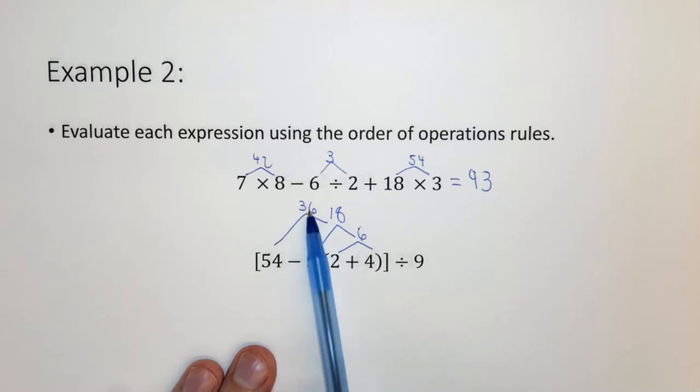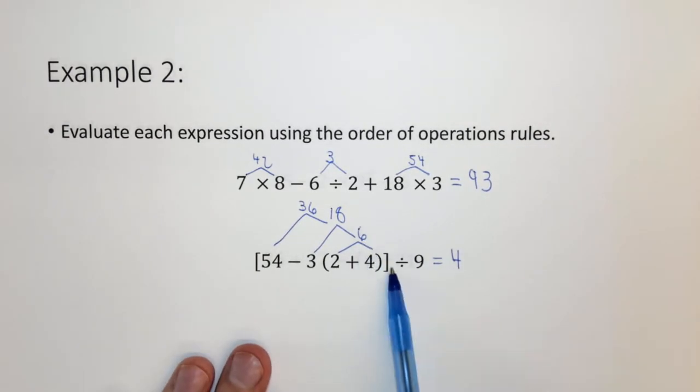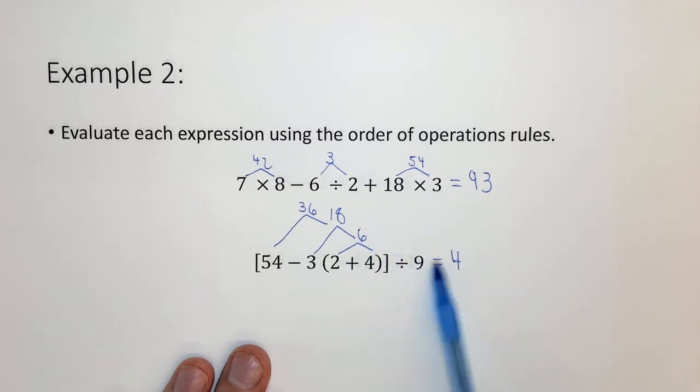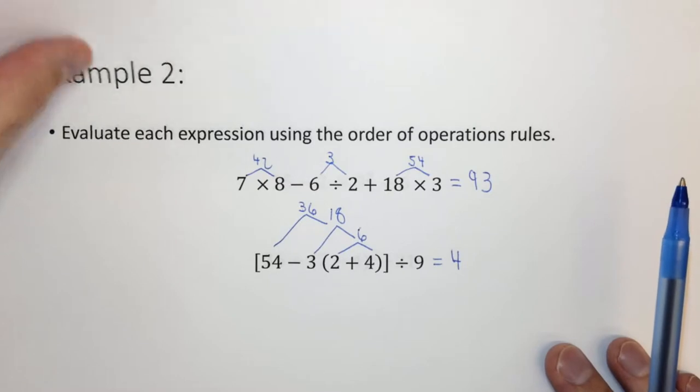Now we have the 36, and we want to divide by 9. 36 divided by 9 is 4. So we have to use the parentheses. Do the thing in the innermost parentheses first, then the multiplication, then the subtraction, and because this is all in parentheses, we do all of that before we do the divide by 9. That's how that works.